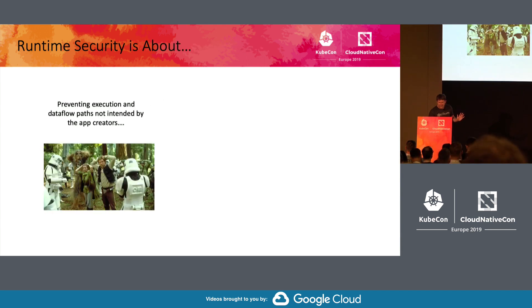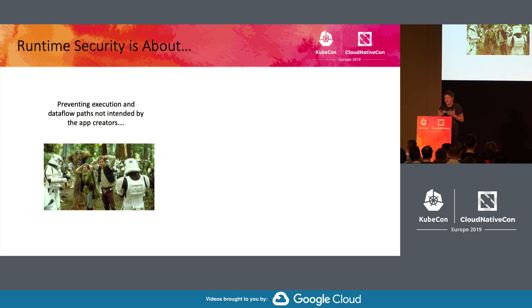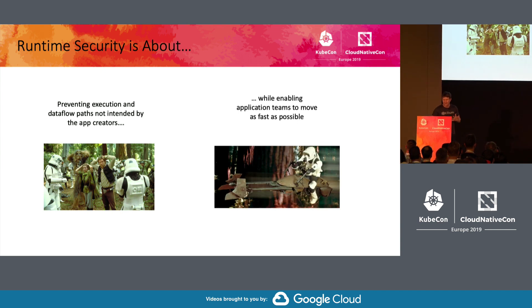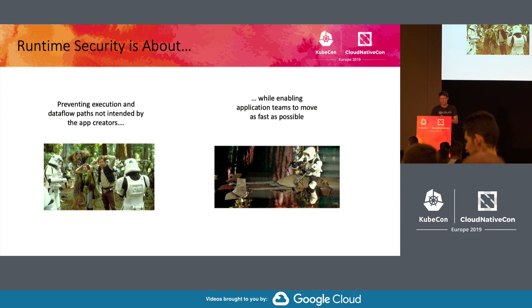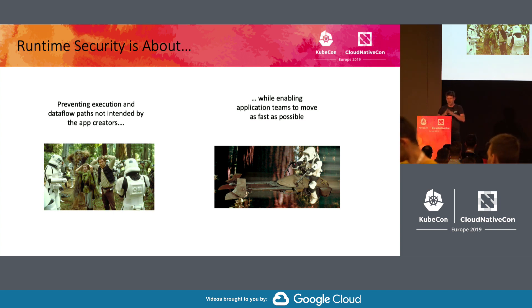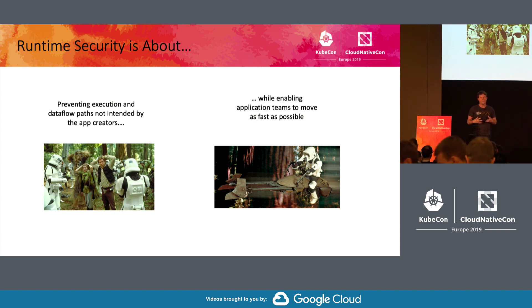So what should security be doing? Security should be preventing these invalid execution and data flows. But preventing stuff isn't good enough — you have to do it in a way that application teams don't experience friction. They can still move as fast as they want and deliver their applications at full speed. That's what I think is so cool about BPF and the potential of BPF for Kubernetes-aware security: it's not just about being more secure, it's about being more secure in a way that's very low friction and doesn't get in the way of your application developers.